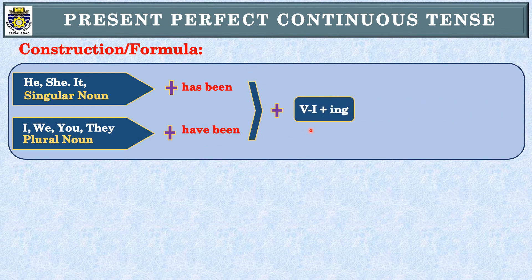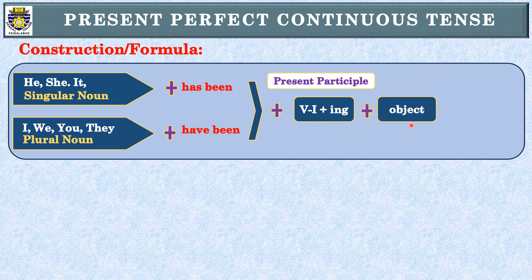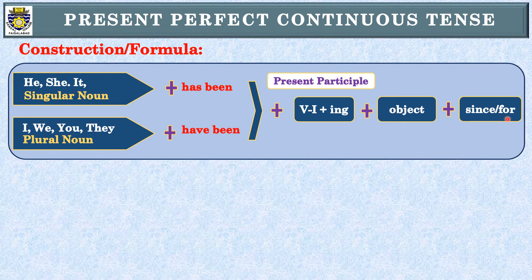'has been' یا 'have been' لکھنے کے بعد ہم verb کی first form use کریں گے اور اس کے ساتھ I-N-G کا اضافہ کریں گے۔ اگر آپ first form کے ساتھ ING add کر دیں تو اس کو present participle کہا جاتا ہے، جسے normally fourth form of verb بھی کہتے ہیں — جیسے write سے writing، drink سے drinking، go سے going۔ اس کے بعد object لکھیں گے، اور پھر since یا for لکھیں گے۔